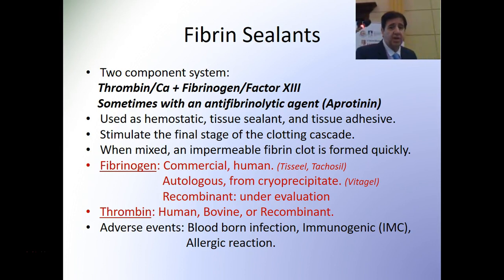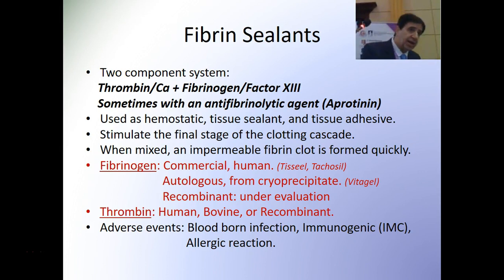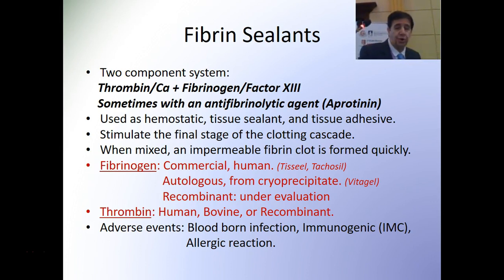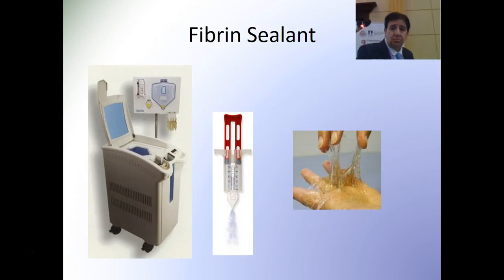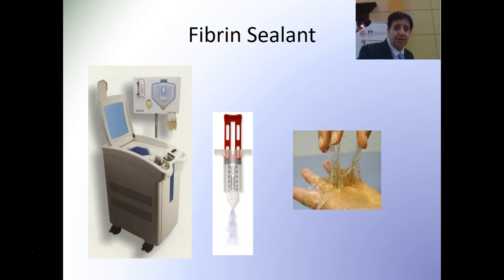Whenever the fibrinogen is of human origin, we again have the same concern about blood-borne infection. If it is bovine, again there's the risk of immune coagulopathy and allergic reaction — so we need to think about fibrin sealants much the same way as we think about thrombin. These are some of the machines available for fibrin sealants, and it's interesting to see how they can create a real seal.